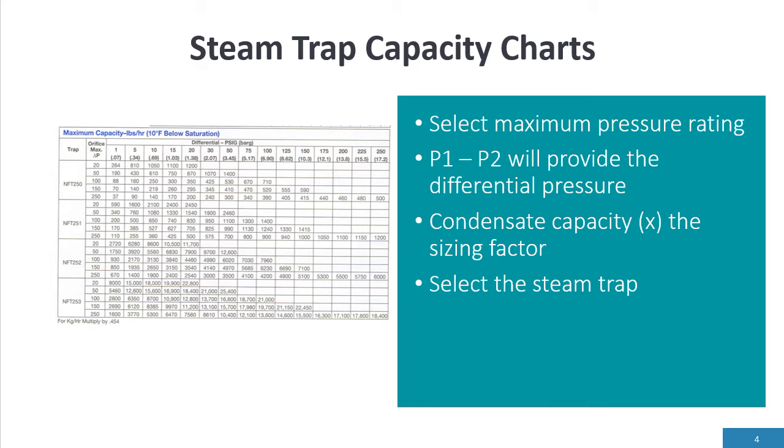Therefore we select a maximum pressure rating. The maximum pressure rating would be 150 psi, 366 degrees. Then we come up with P1 minus P2, which on our example we came up with a differential pressure of 55 psi. The condensate capacity sizing factor will take 200 pounds per hour with a sizing factor to 600 pounds per hour.